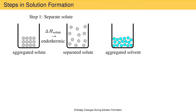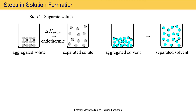Next, we take the solvent particles and separate them, breaking all solvent-solvent interactions. This is step two. Separating the solvent particles is always endothermic. Even though the particles in a liquid solvent are not bonded to each other, they are weakly associated by intermolecular forces, and it always takes energy to overcome these intermolecular interactions. The symbol for this enthalpy change is delta H subscript solvent. It is always positive. The more strongly the particles of the liquid are associated with each other — in other words, the stronger the intermolecular force — the larger the value of delta H solvent.